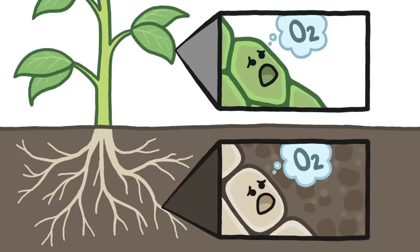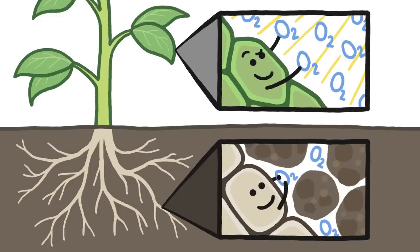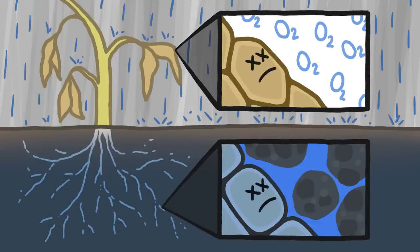All plant cells need oxygen to function. The cells above the ground take it from photosynthesis or from the air around, and the cells underground take it from tiny air pockets in the soil. But if the soil is too wet for too long, the roots can literally drown, killing the entire plant.